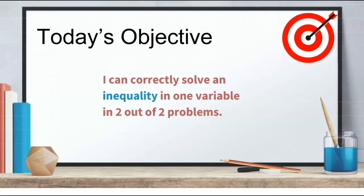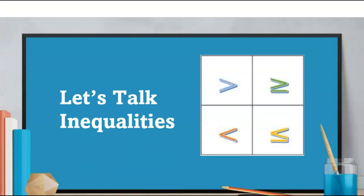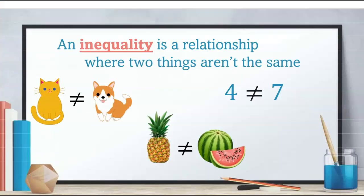Let's do a very brief review of everything we've learned about inequalities since about second grade, just to make sure we're all on the same page. An inequality is a relationship where two things are not the same. So this cat is not the same as this dog, this pineapple is not the same as this watermelon, and four and seven are not the same either. We use a symbol that looks like an equal sign with a slash through it — that says not equal.